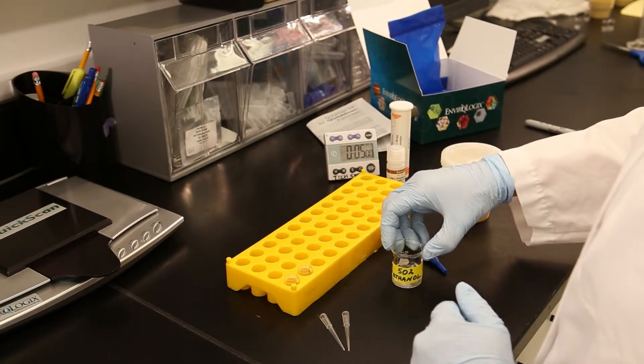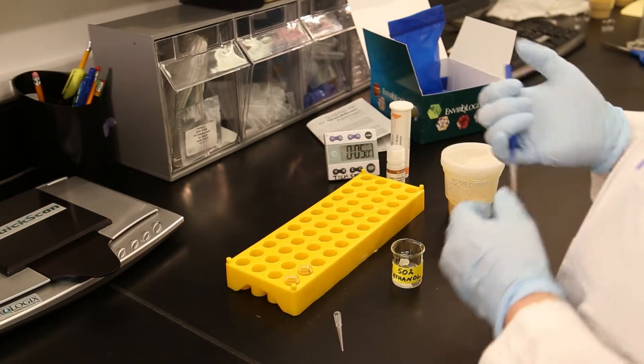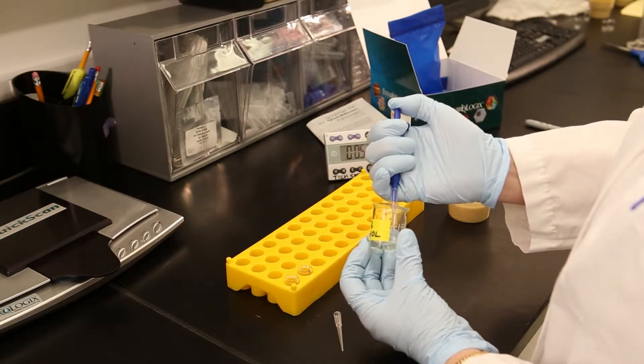Using a calibrated pipette and a fresh pipette tip, place 100 microliters of 50% ethanol into the first vial. This will be your dilution vial.